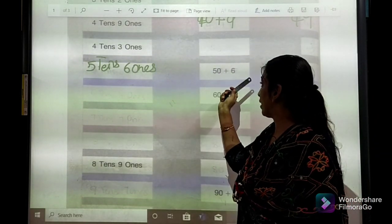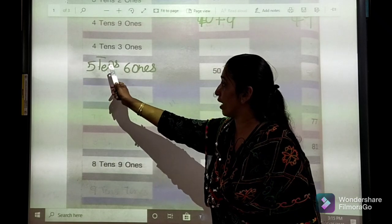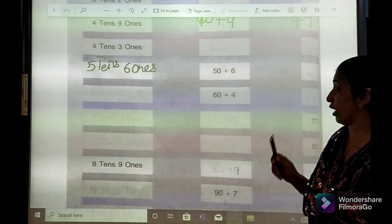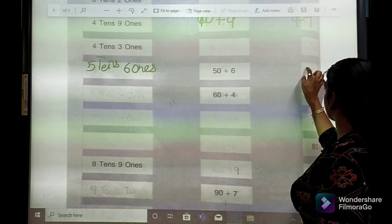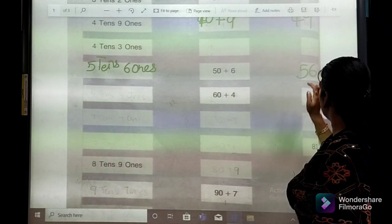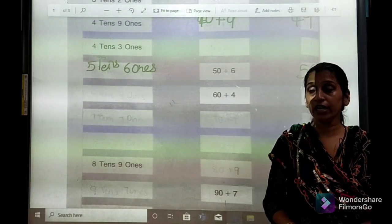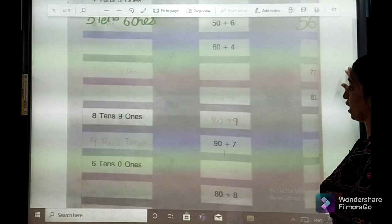So, 50 plus 6, we will do 5 tens and 6 ones. This way, we will do 5 tens and 6 ones. Then, moving towards next.